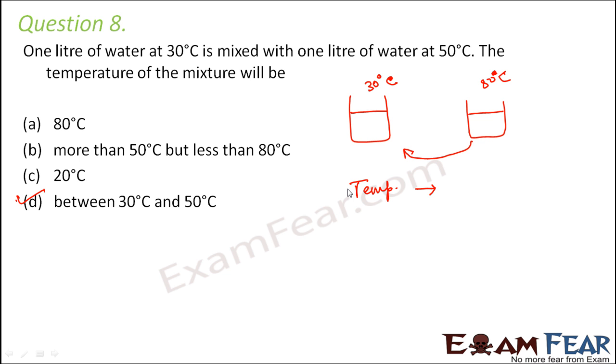When you are mixing both waters, the water from the hotter container will start flowing to the one at lower temperature. The heat will flow from hotter water towards colder water so both will reach a stable temperature. Therefore the temperature of the mixture would be more than 30 degrees but less than 50 degrees.